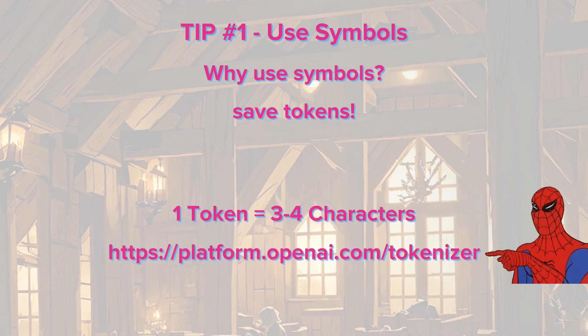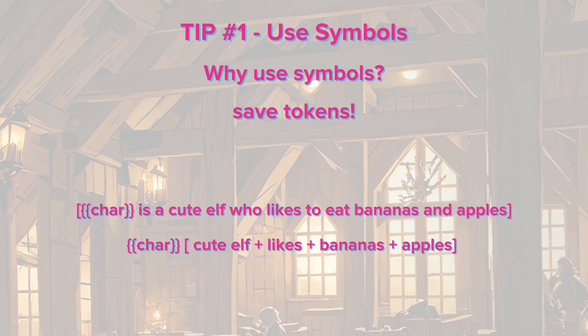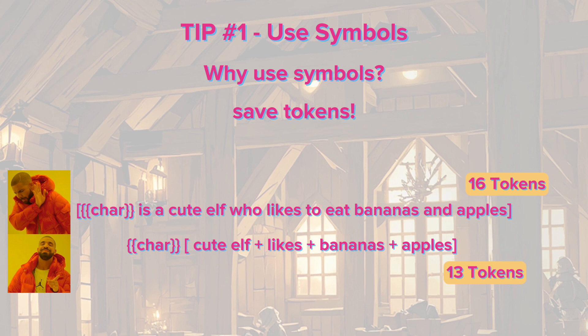You can use this website here for free to count them. Here is a simple comparison where the top one uses 16 tokens and the bottom one with symbols only uses 13, and they mean the same thing to AI. Using fewer tokens will help make your character information more concise and AI can process your character information more effectively most of the time.